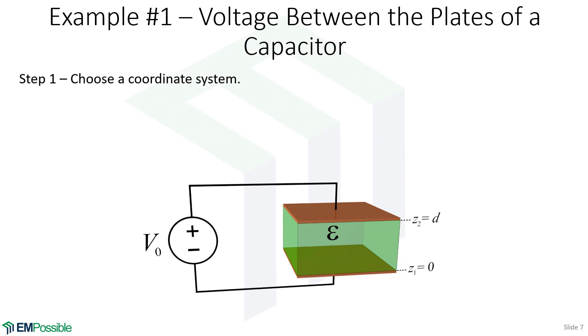We'll follow the recipe that we laid out a few minutes ago, and the first step of this is to choose a coordinate system. Well, staring at this, it looks rather cubish or rectangular-ish. So I think the Cartesian coordinate system is the best way to analyze this.